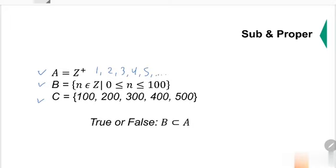B is a set of all integers N such that N is greater than or equal to 0, but also less than or equal to 100. So up to 100 only. Set C is already listed.